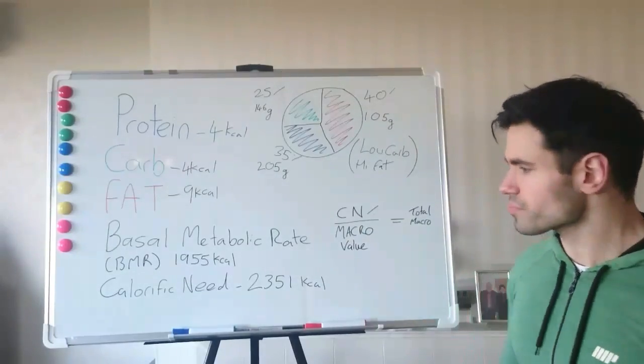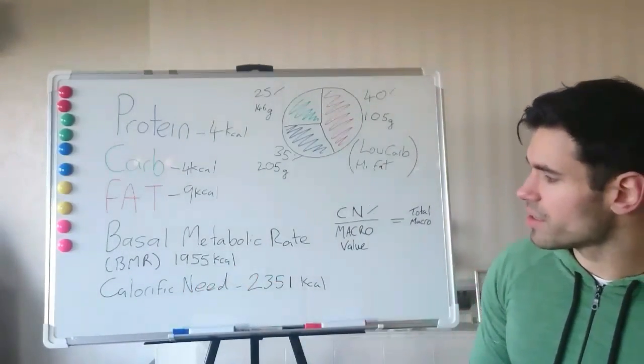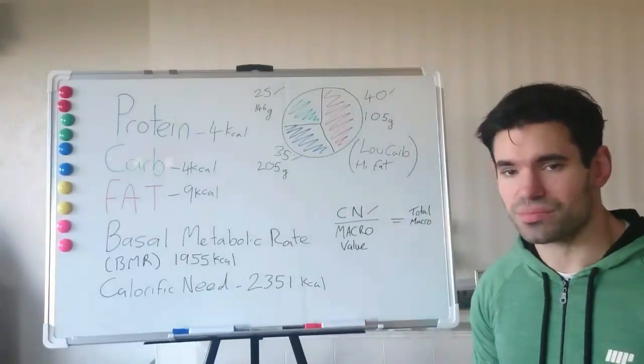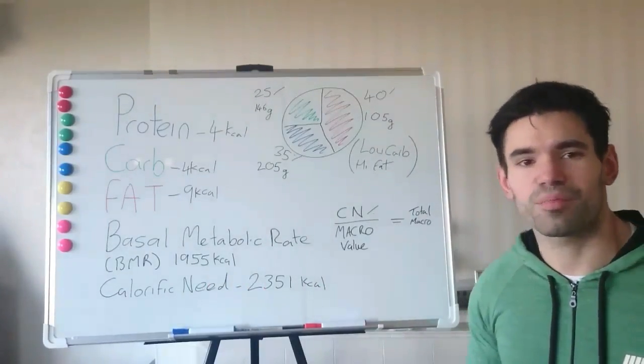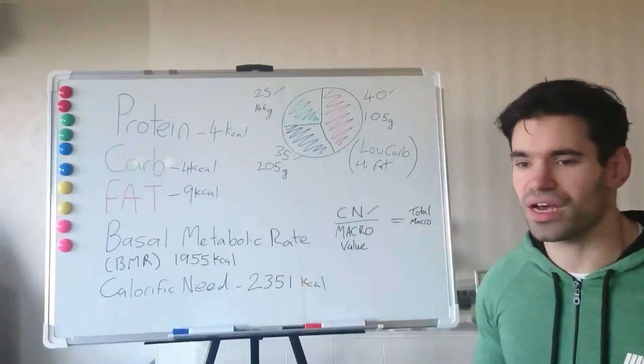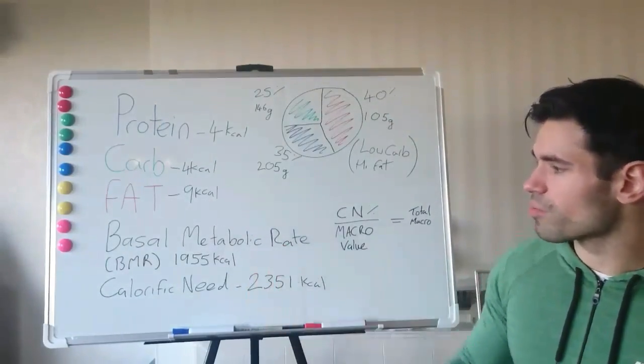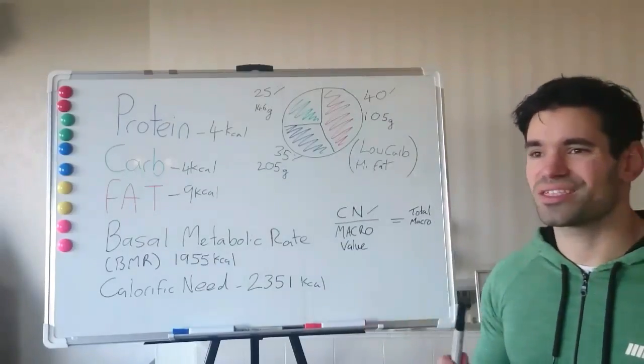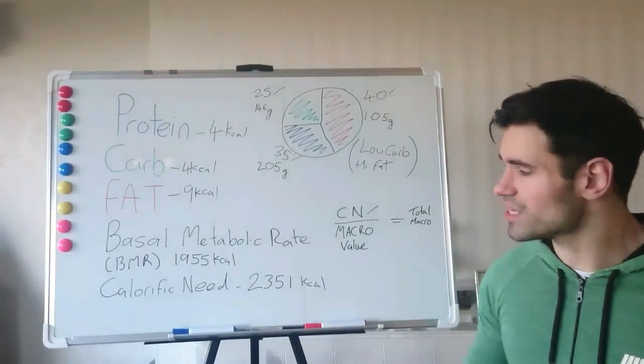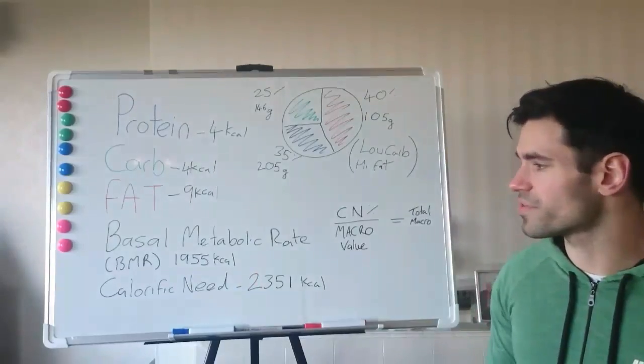So for me, mine is 1,955 calories. This is worked out by a number of formulas. You can go online and find a calculator that will do it for you. Your basal metabolic rate is based on your height, your age, your weight, and your gender. So for me it's 1,955 calories.